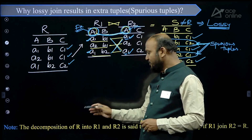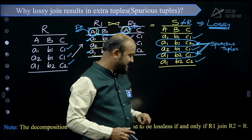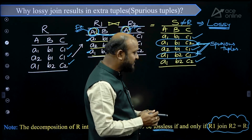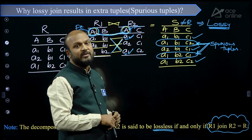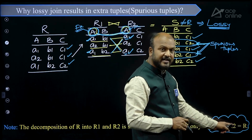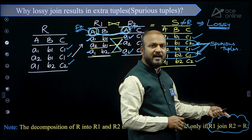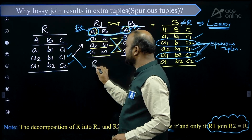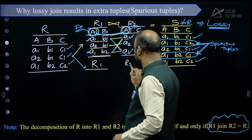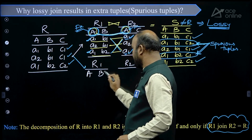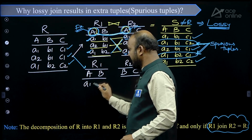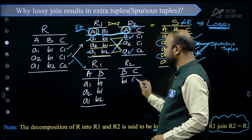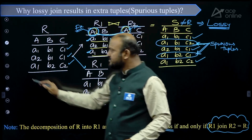The conclusion is: the decomposition of R into R1 and R2 is lossless if and only if R1 join R2 equals R. This is true if the common attribute of R1 and R2 is a key in either R1 or R2 or both. Now suppose we decompose R into R1(A, B) and R2(B, C). R1 has tuples A1, B1; A2, B1; A1, B2. R2 has tuples B1, C1 and B2, C1. The join is performed with respect to common attribute B.